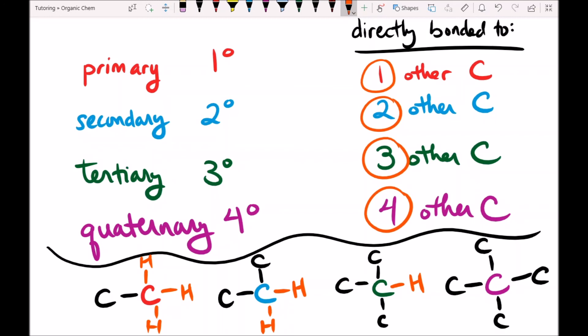It could be chlorine, hydrogen, bromine. That's not what determines whether it's primary, secondary, etc. The degree of substitution for a carbon atom is only determined by the number of carbons that are attached to the carbon atom of interest.